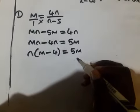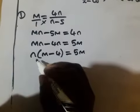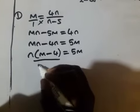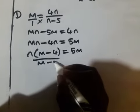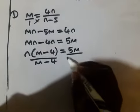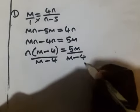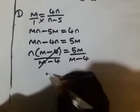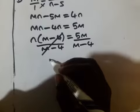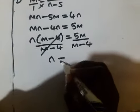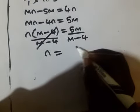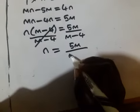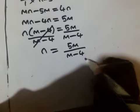At this stage, you have to divide both sides by m minus 4, then m minus 4. So m minus 4 and m minus 4 can cancel. Then it will be n equals 5m over m minus 4.